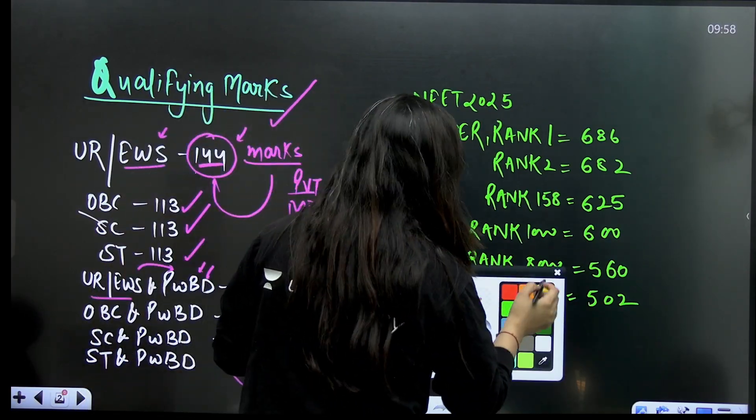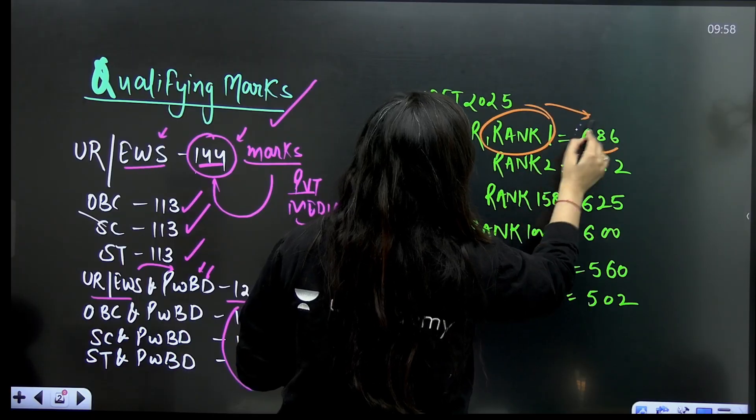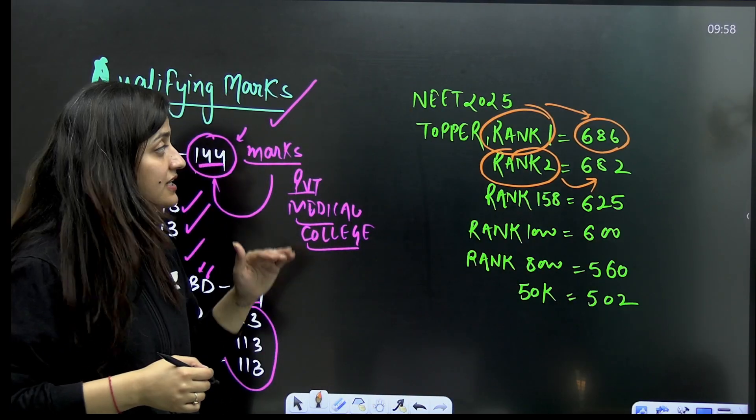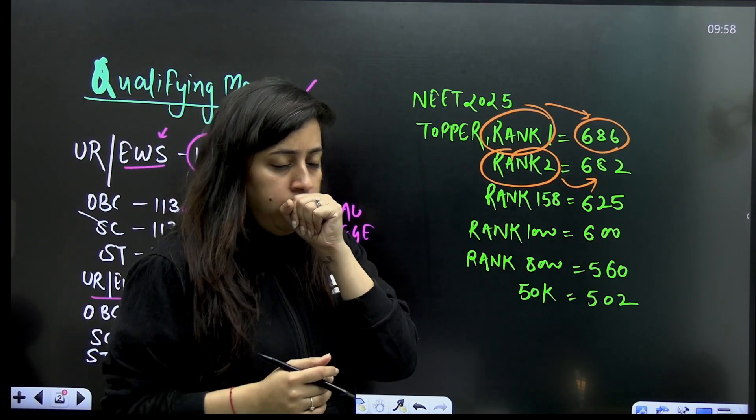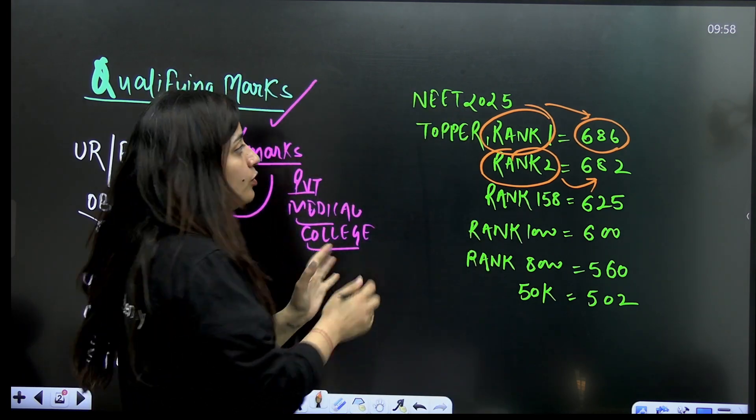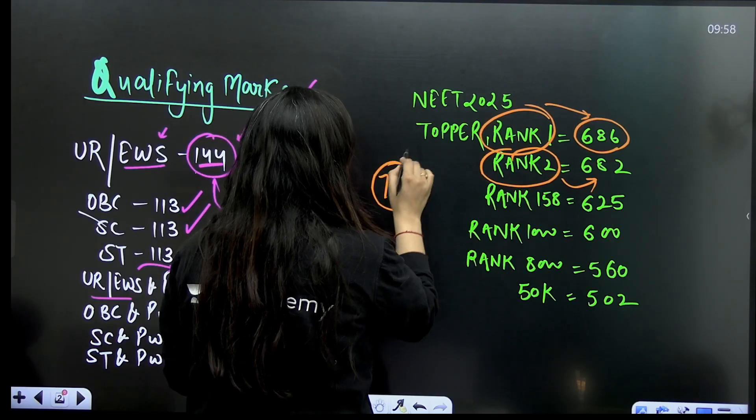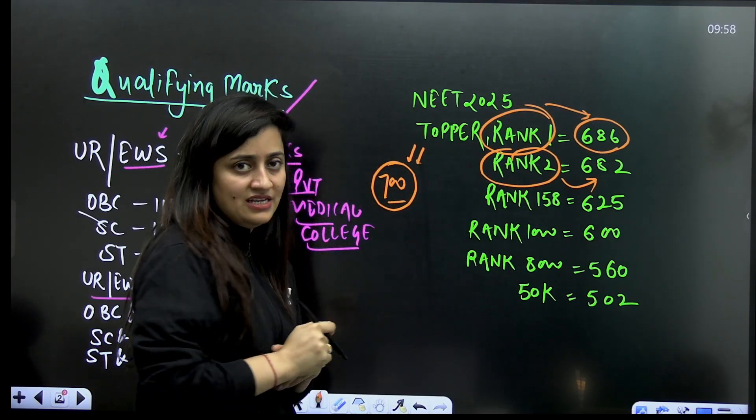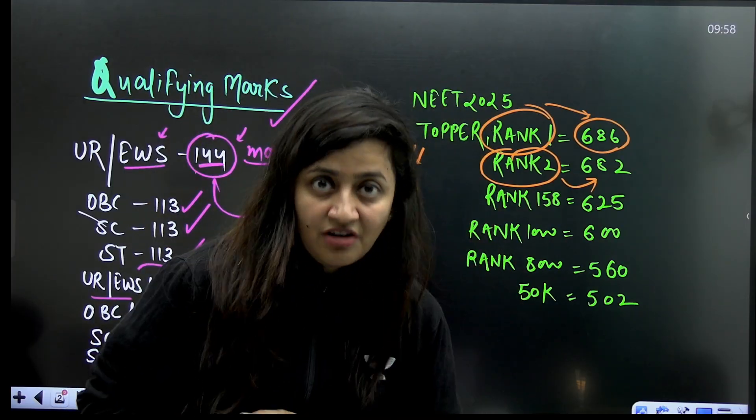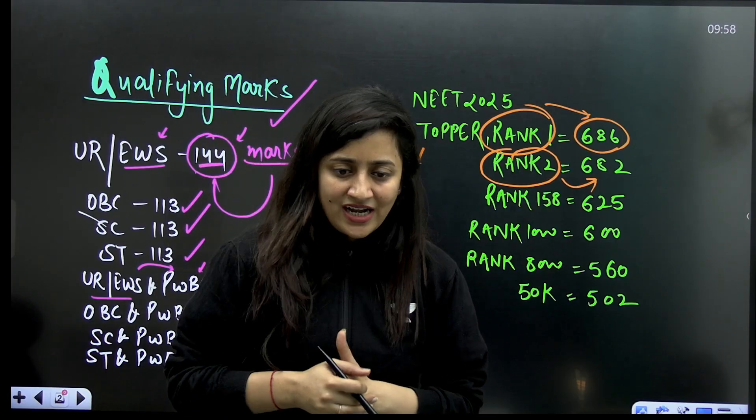We know that rank 1 holder is having 686 marks, rank 2 is having 682 marks. If I talk about the result this time, you can clearly see that nobody was able to cross or even touch 700 marks because the paper was unexpected - the physics part was tough and biology was quite lengthy.